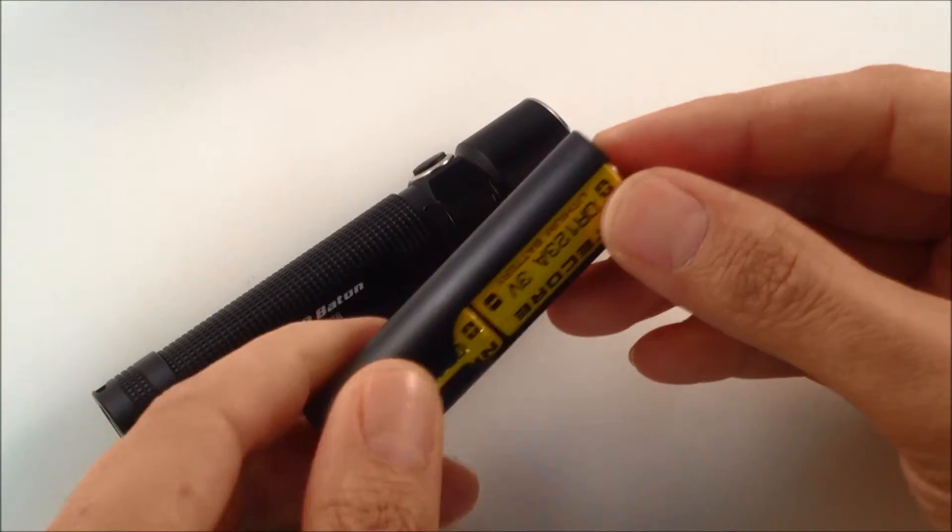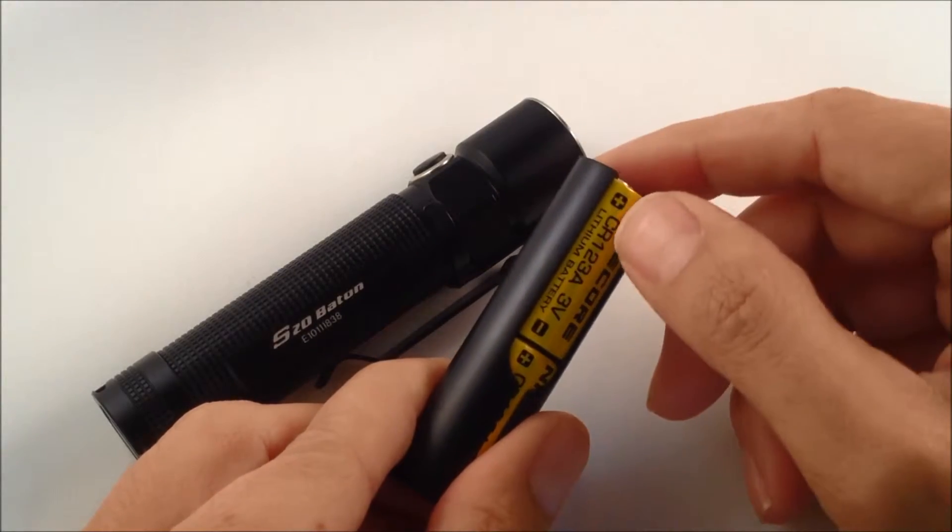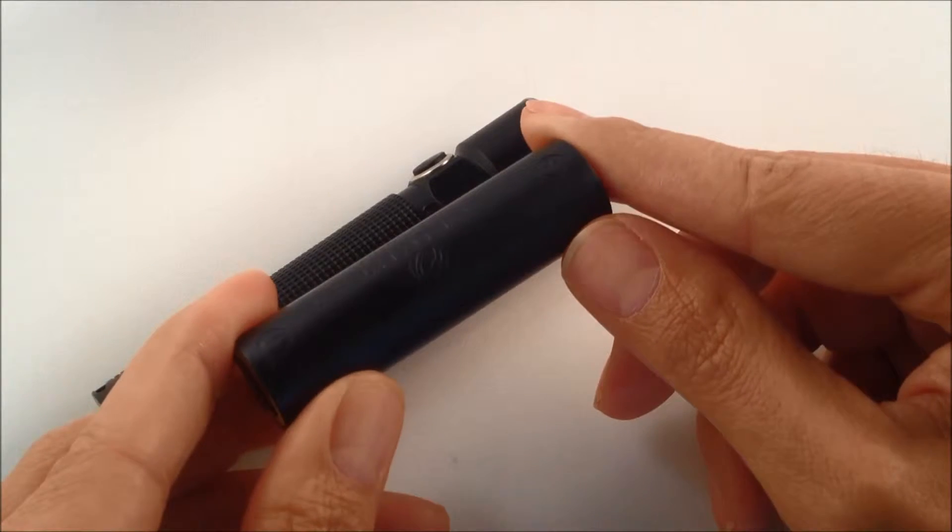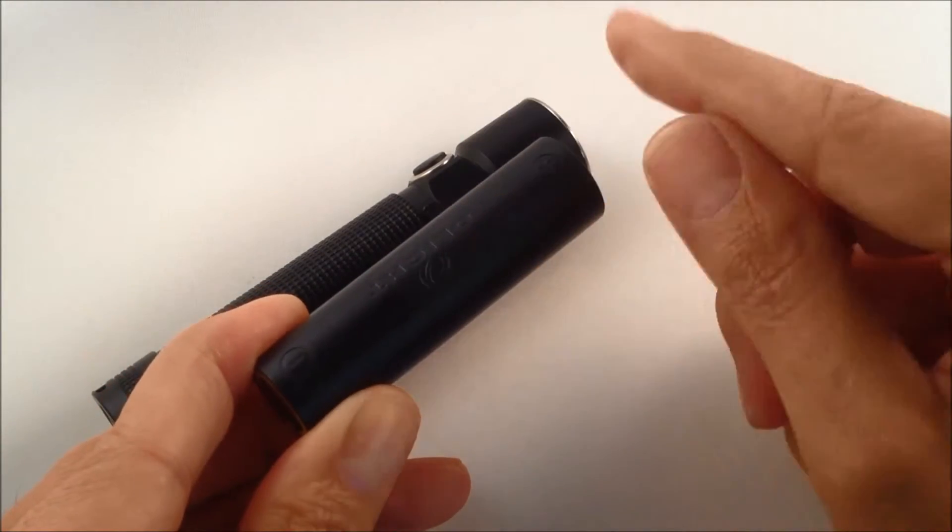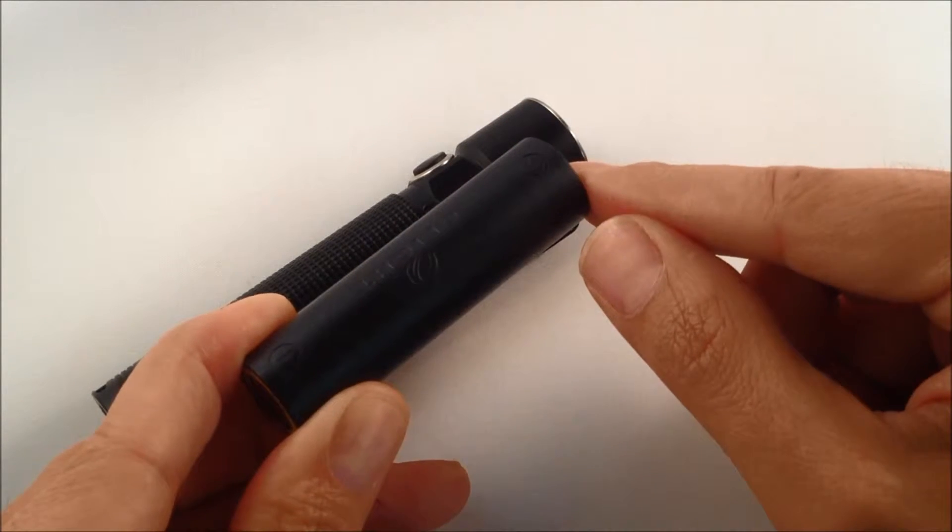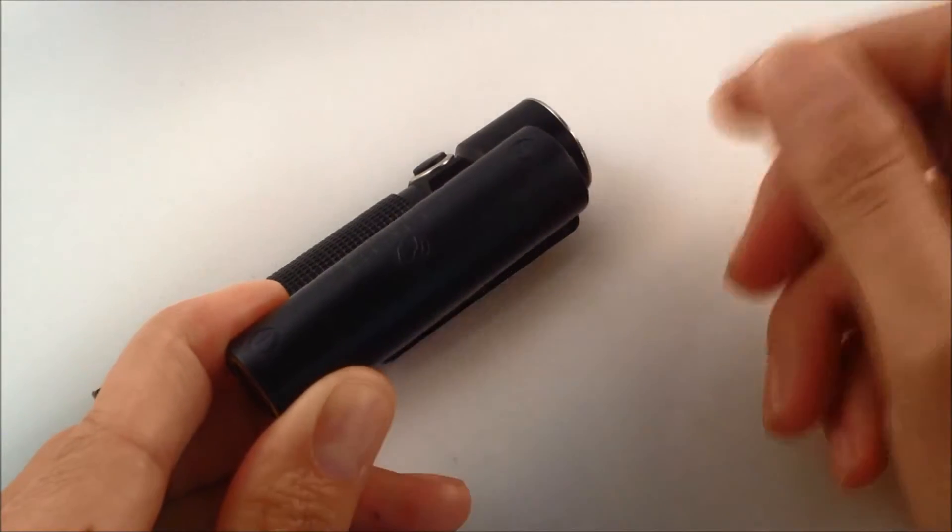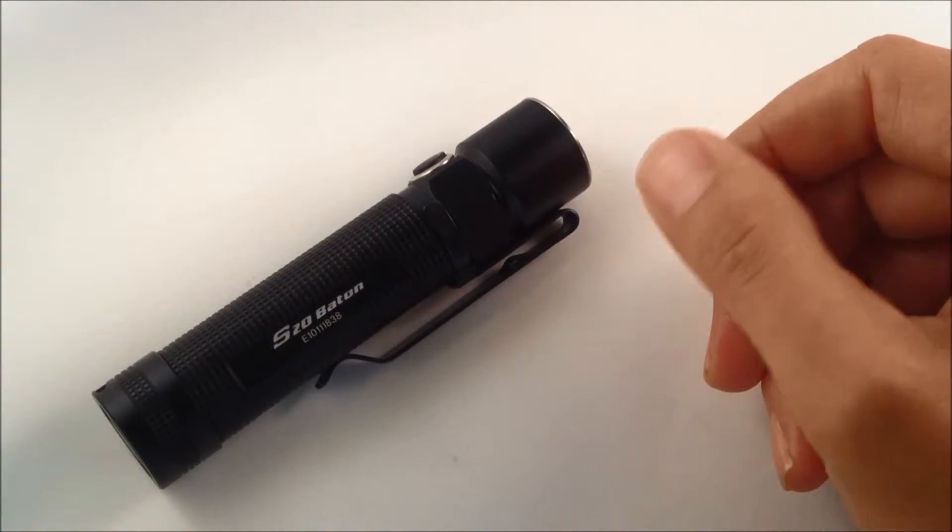There is a slight circumference difference of the CR123A's versus the 18650. It is nice, and I have seen other manufacturers start to do this as well when they give you an option of powering by both. Including the magazine is very helpful. It prevents that little bit of rattling and you get the most performance out of your light.